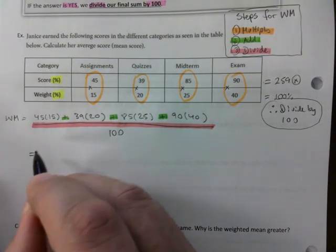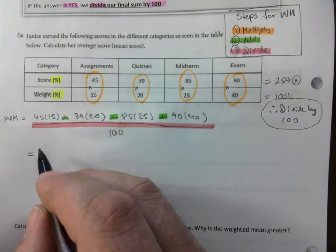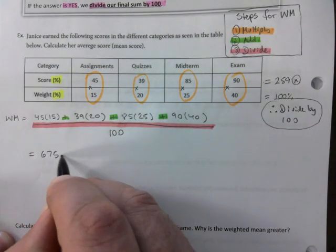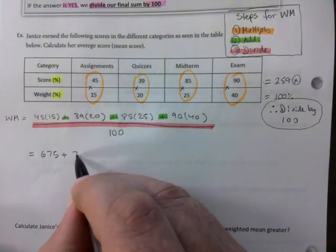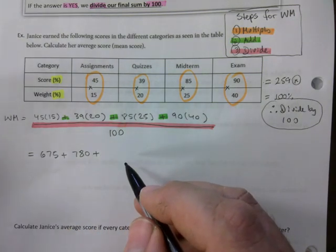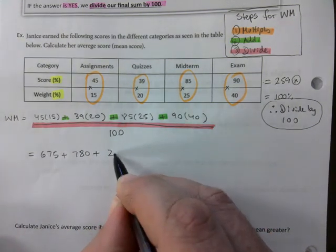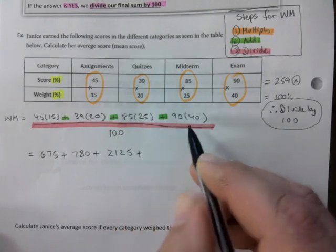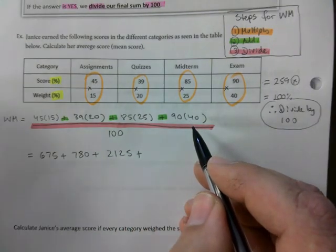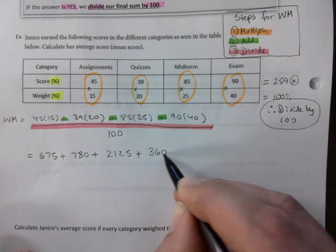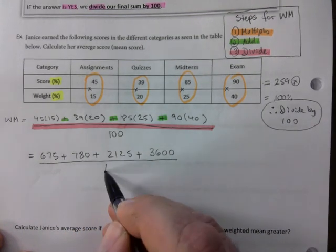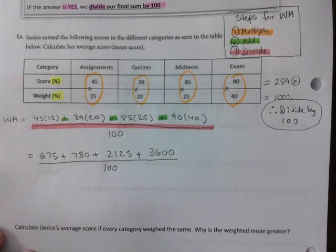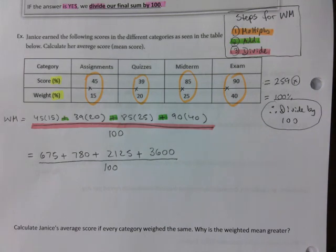So 45 times 15 on my calculator, 675 plus 39 times 20. This is 780. 85 times 25, 2125. And 90 times 40, 3600. I will usually give you enough room to show your work. And I still divide everything by 100. And let's do one more row.